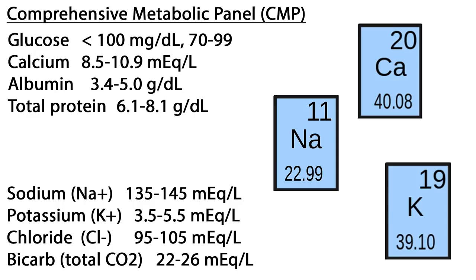Electrolytes in the CMP include sodium, potassium, total CO2 or bicarbonate, and chloride. Electrolyte measurements help investigate conditions that cause electrolyte imbalances, such as dehydration, kidney disease, lung diseases, or heart conditions.